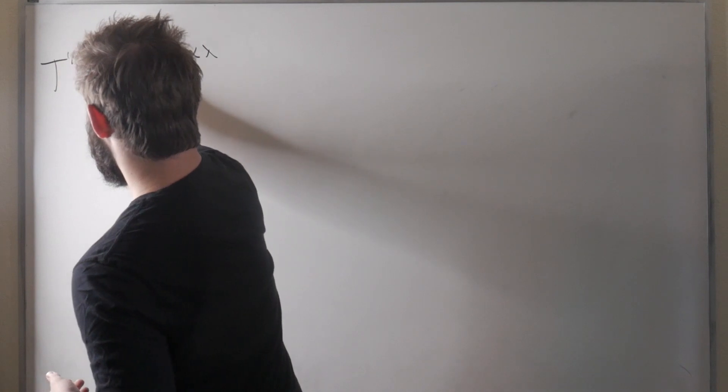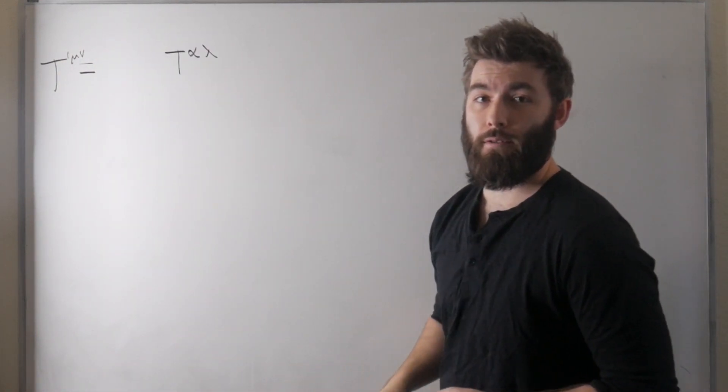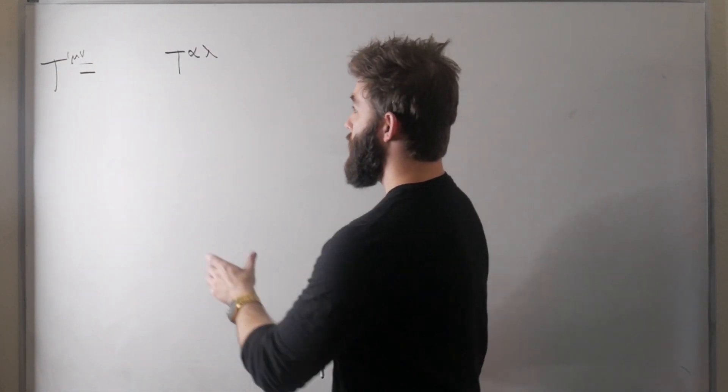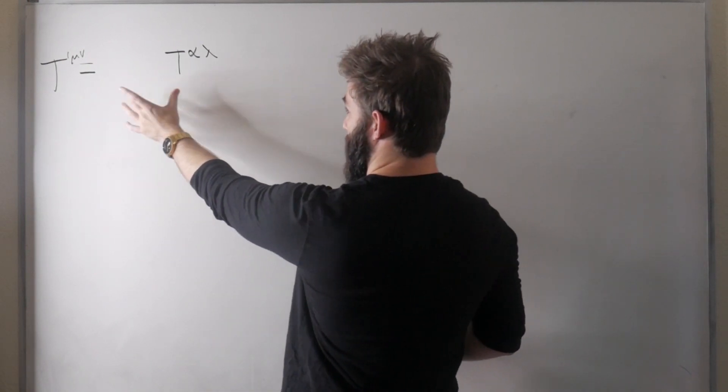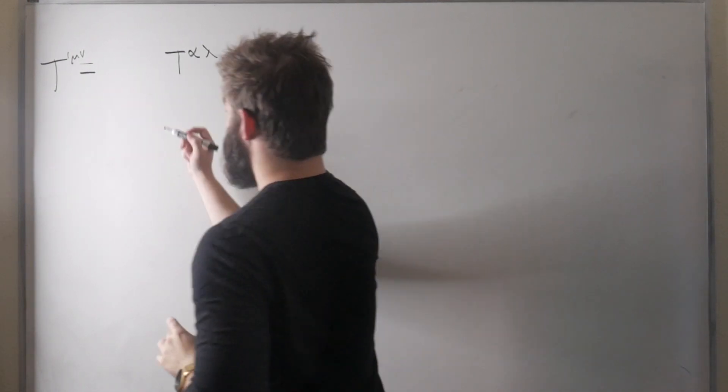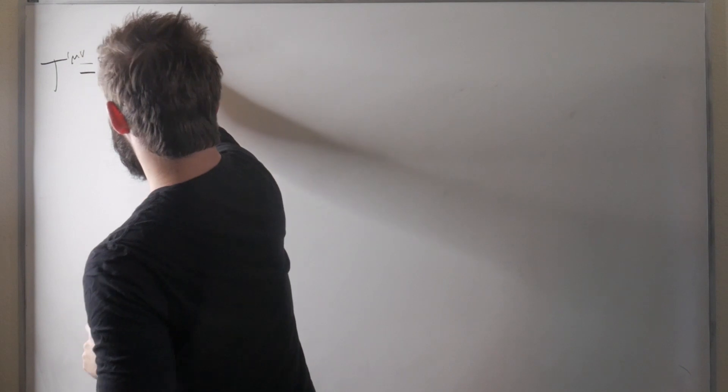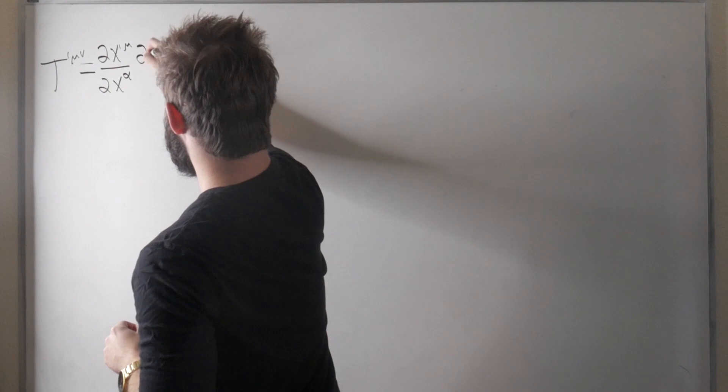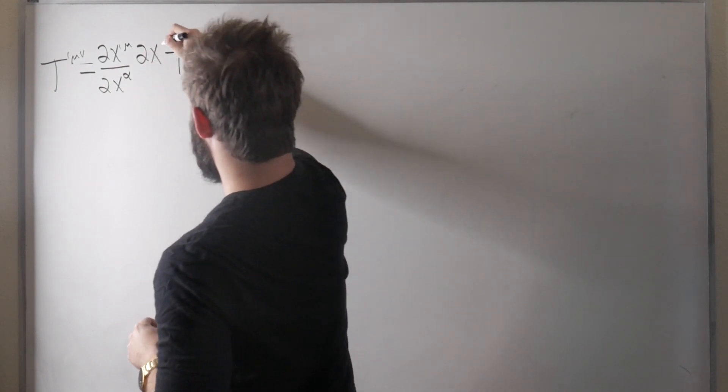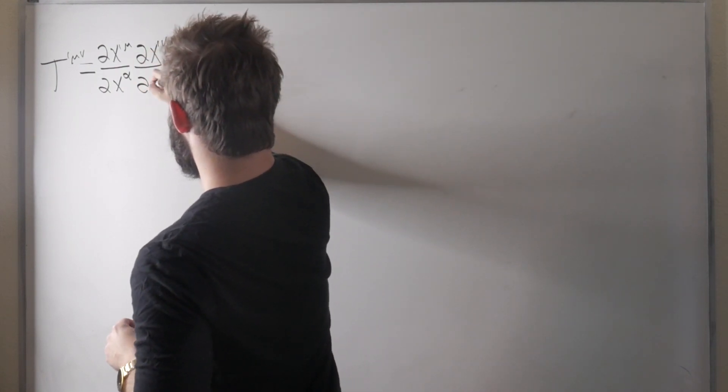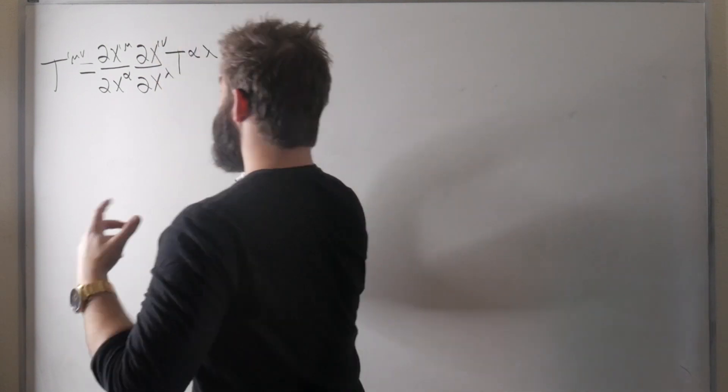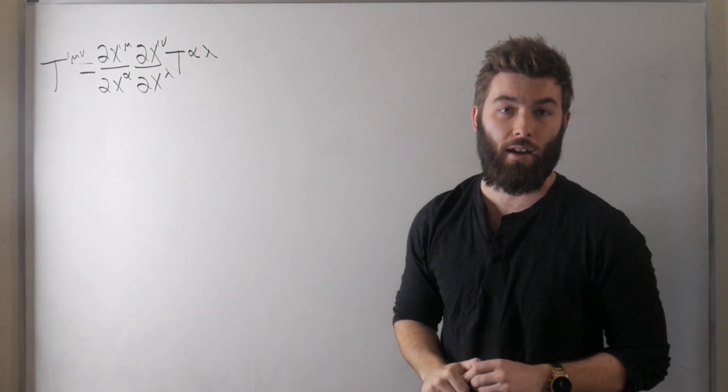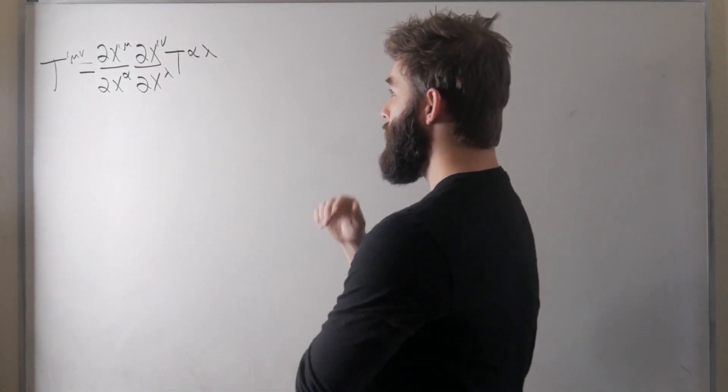Which means that if we can calculate its components in one basis let's call that t alpha lambda and someone else calculates it in another basis say in the prime frame t mu nu, these two are related by two transformation coefficients so it's going to be dx' mu / dx alpha dx' nu / dx lambda. This is the transformation rule for a second rank contravariant tensor.